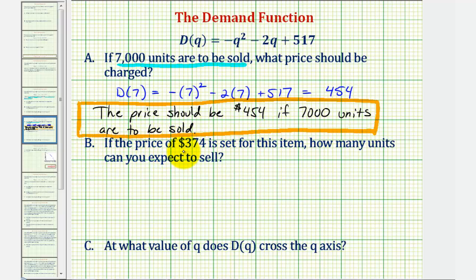B, if the price of $374 is set for this item, how many units can you expect to sell? So in this part, they're giving us D of Q, the price, and we want to find Q. Which means we want to solve the equation 374 equals negative Q squared minus 2Q plus 517.